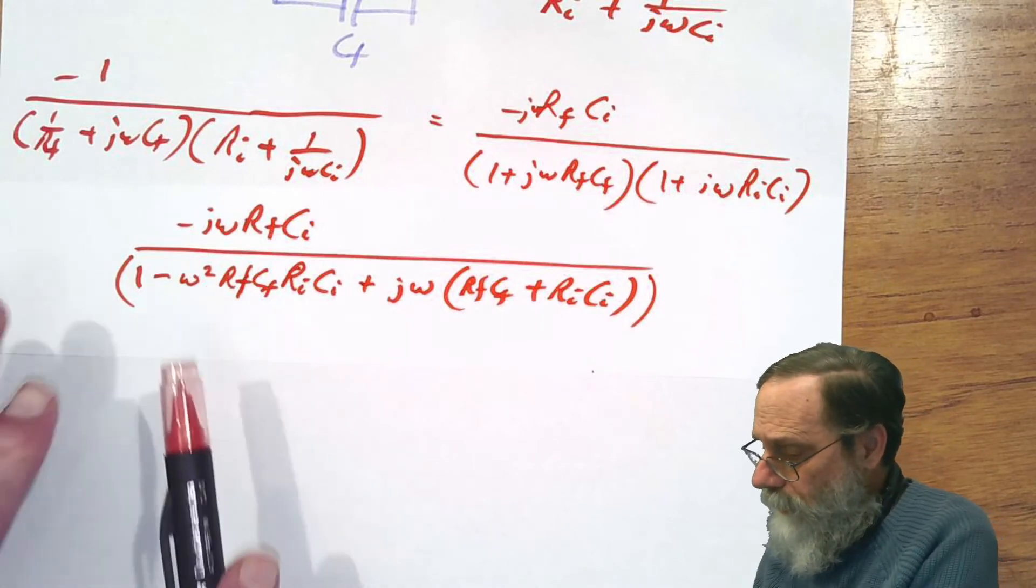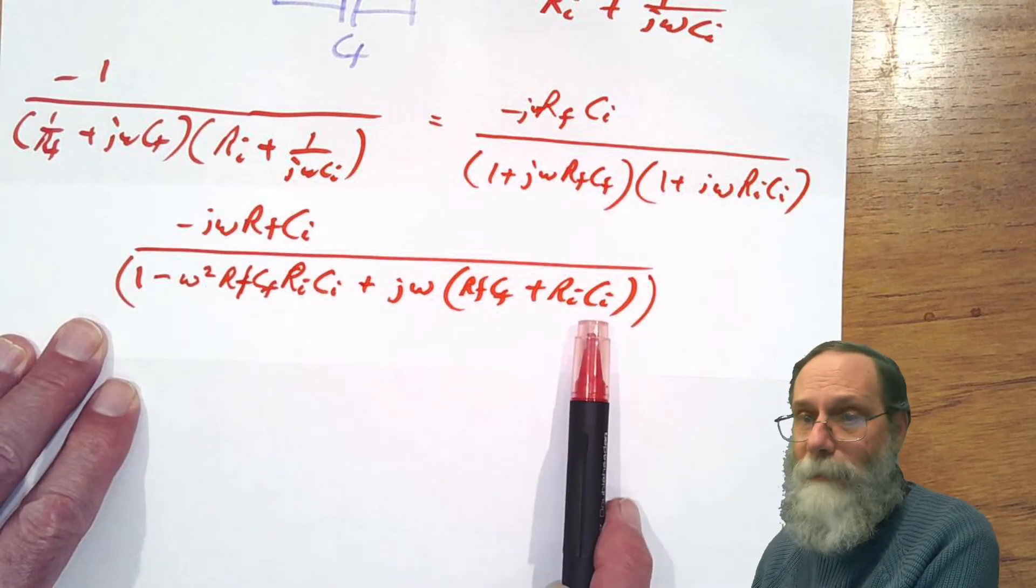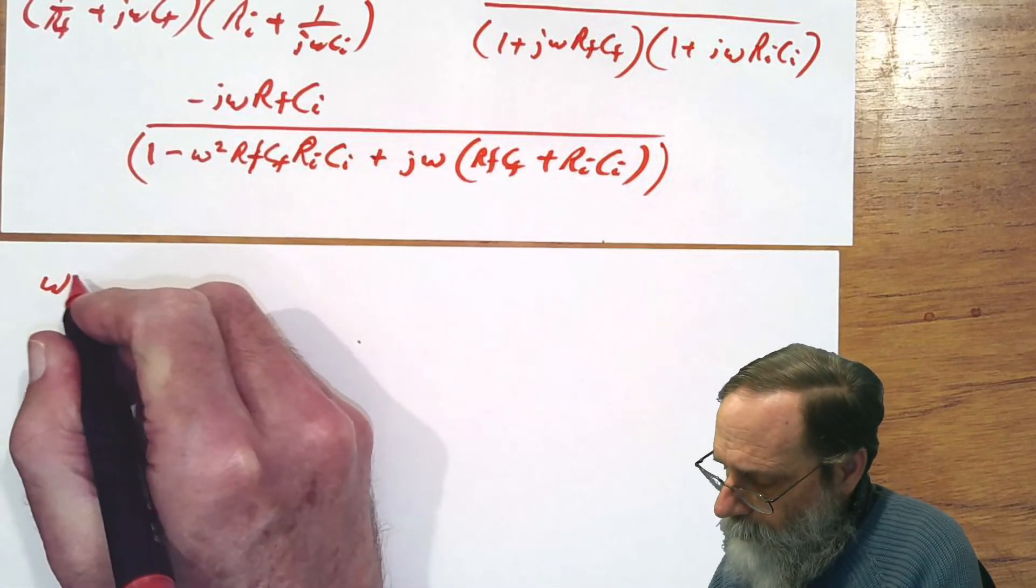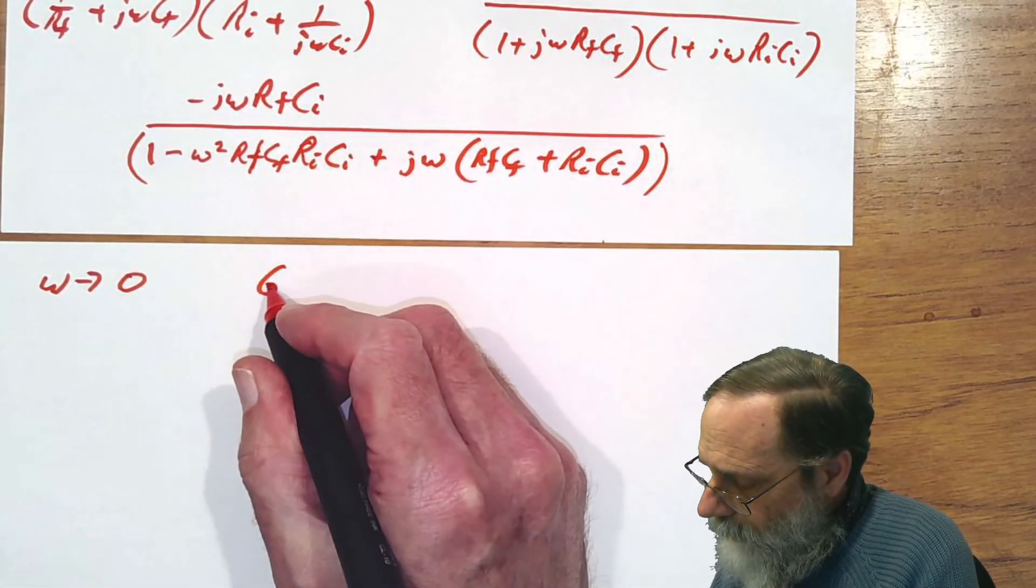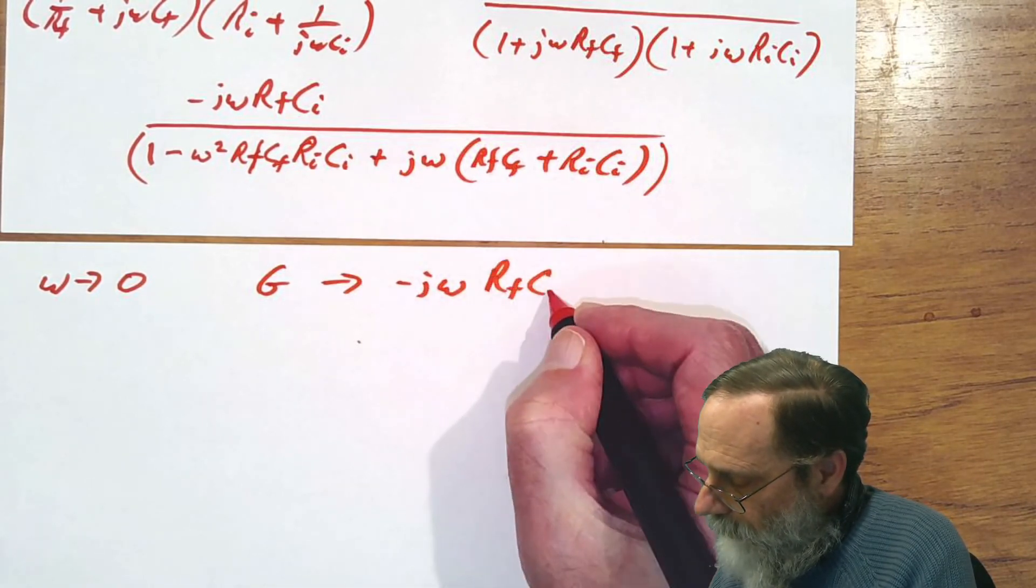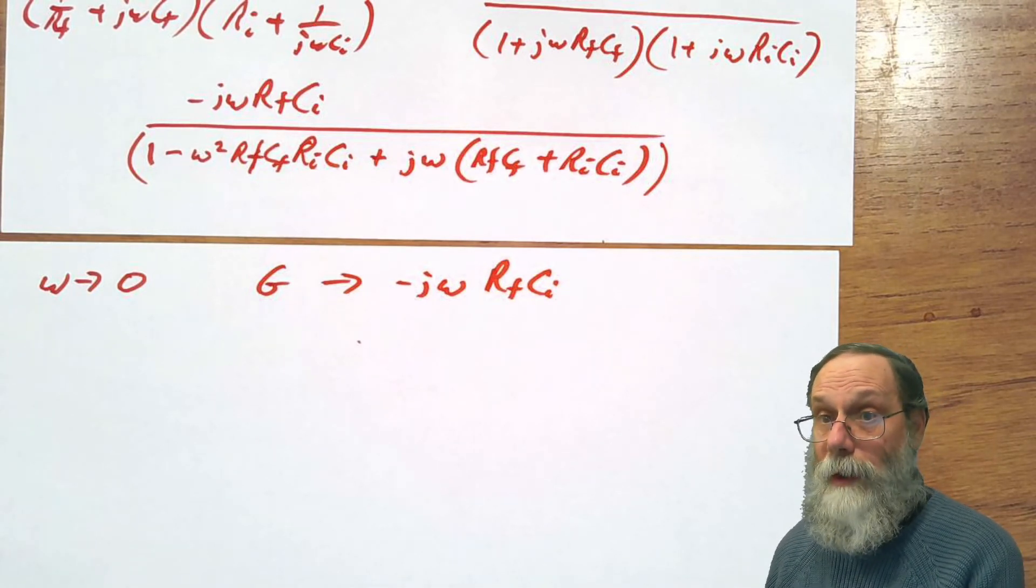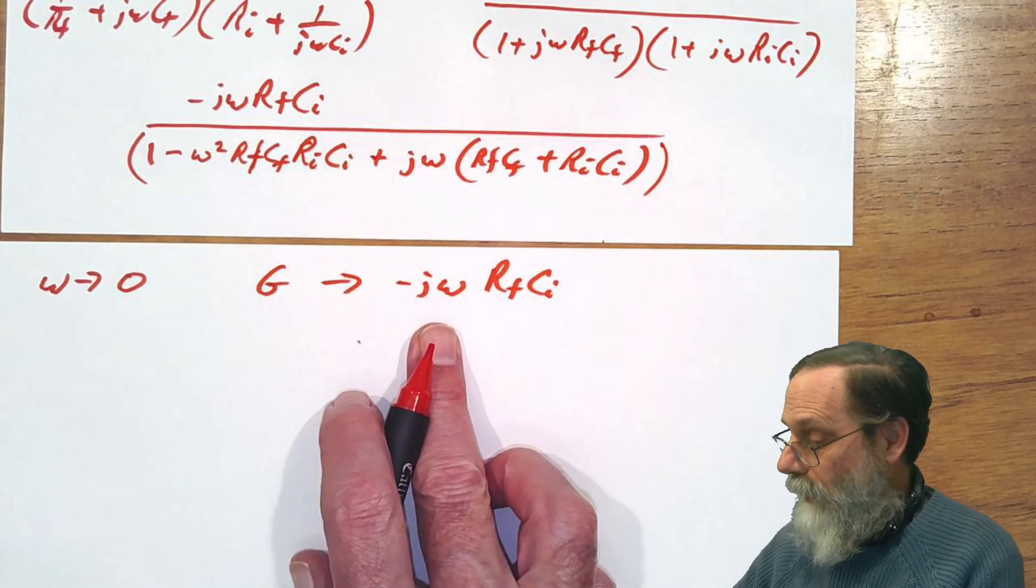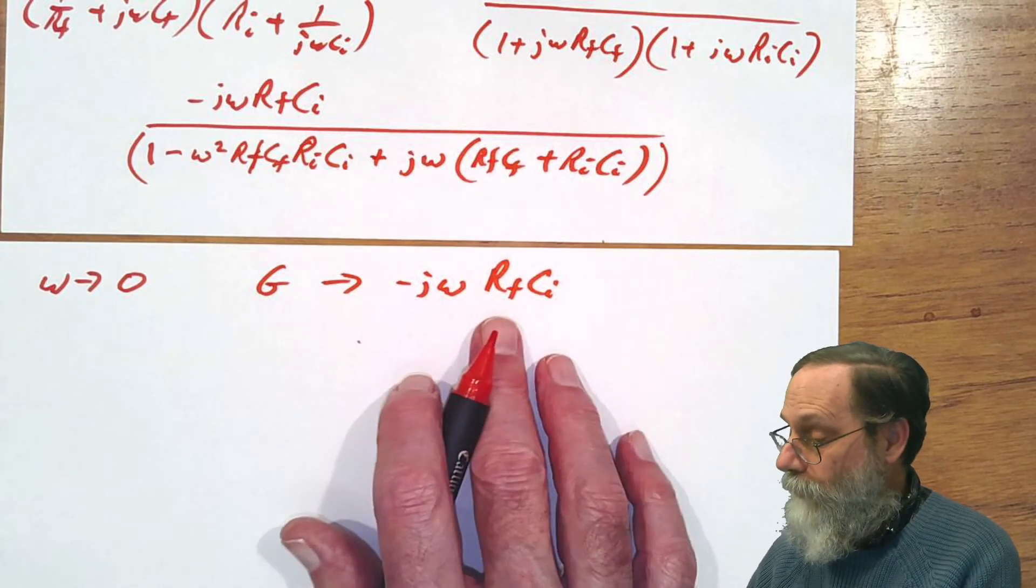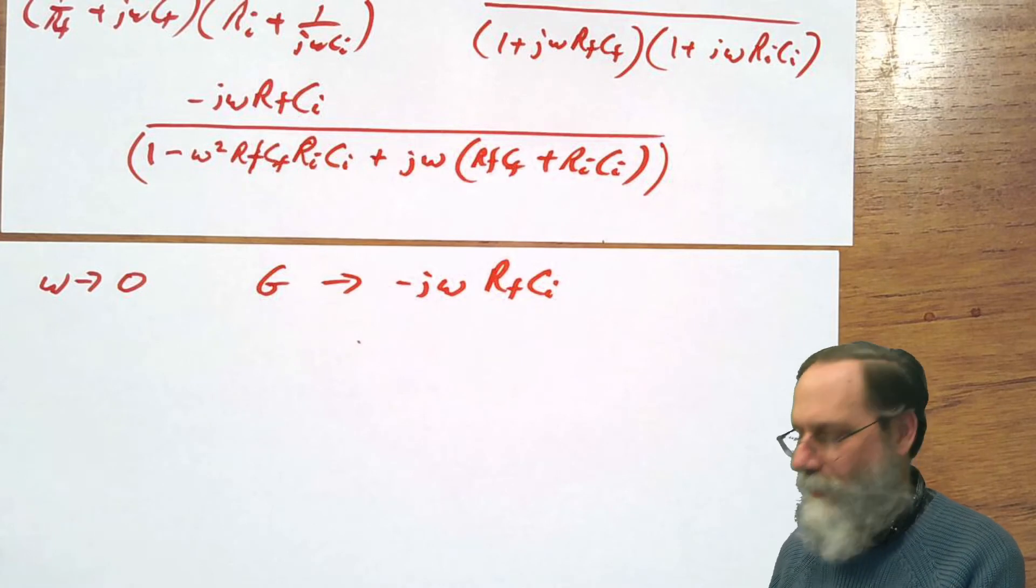What happens as omega goes to zero? As omega goes to zero, this omega squared goes away, goes to zero, this goes to zero, and we've got a one on the bottom. So we can write that as omega goes to zero, the gain goes to minus j omega Rf Ci. And that's the line that we wanted there at the beginning. We've got something that grows with frequency.